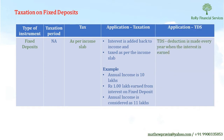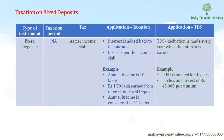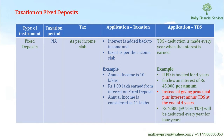Is there a TDS component in fixed deposits? Yes, there is. TDS is nothing but the tax deducted at source. In a fixed deposit, deduction is made every year when the interest is earned. For example, if an FD is booked for four years and fetches an interest of 45,000 rupees per annum, instead of giving the principal plus interest minus TDS at the end of four years, every year 4,500 rupees — that is 10% TDS — will be deducted for four years.